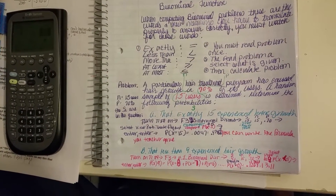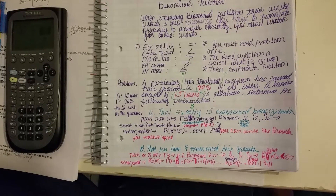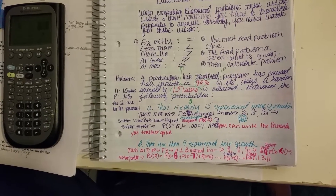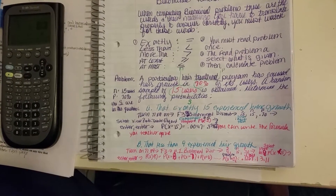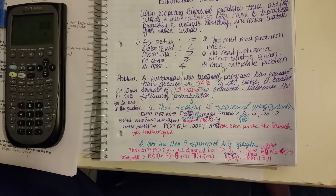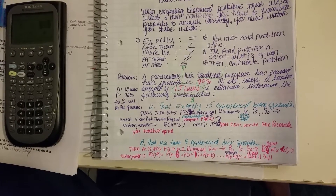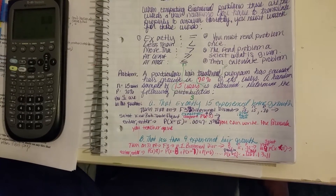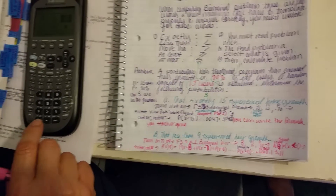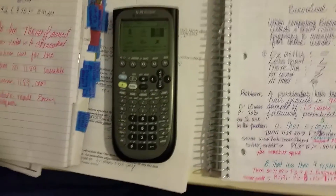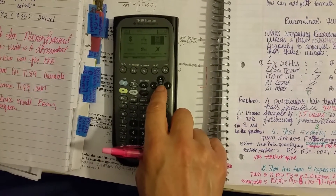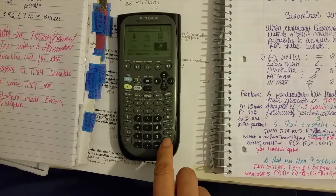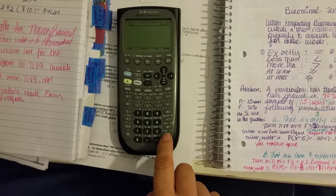First you must read the problem once, then read it again and select what's given, then calculate the problem. So the first thing we're going to do is go to our home page where we have our program loaded into our calculator, and we're going to go to the program Stats Probability and press Enter.